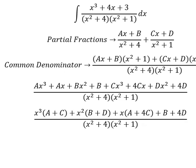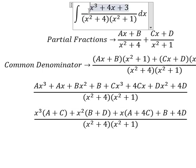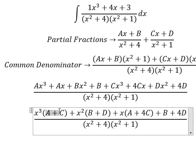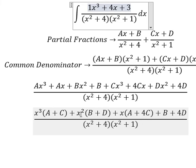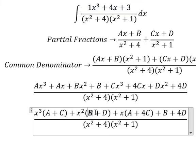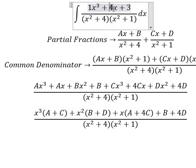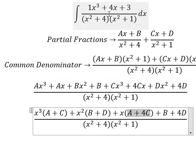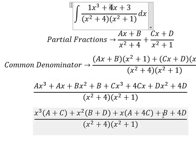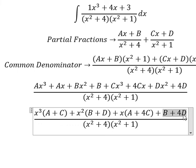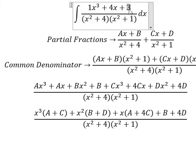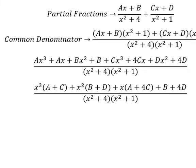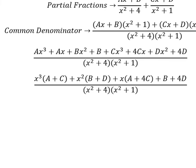Now we compare coefficients. For s³: a+c = 1. We have no standalone s² term, so b+d = 0. For s: a+4c = 4. For the constant: b+4d = 3. Now we create a system of equations.